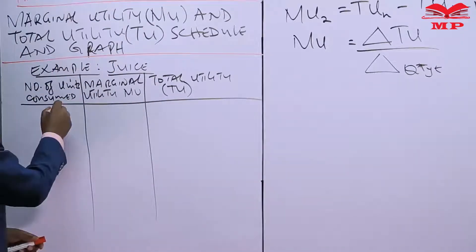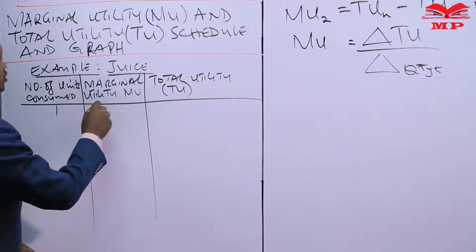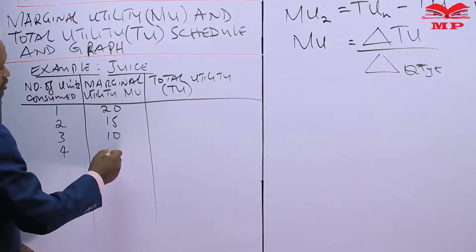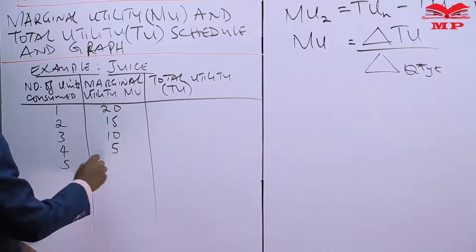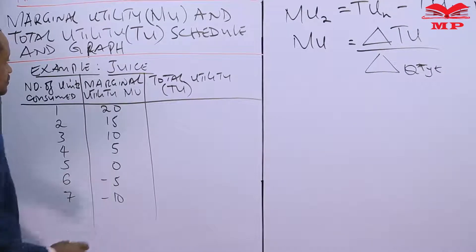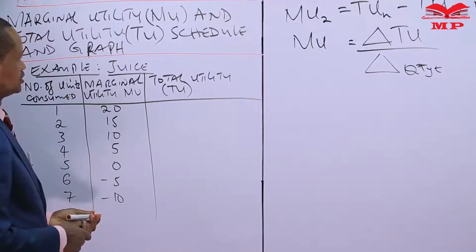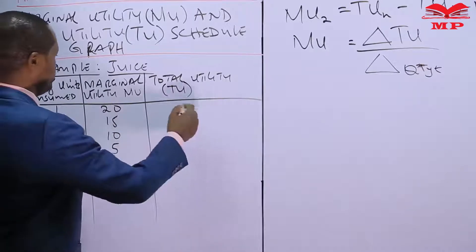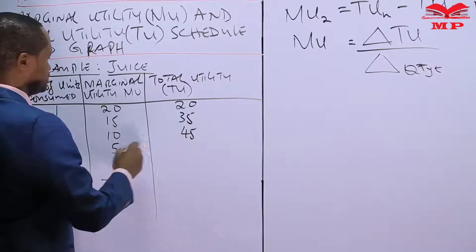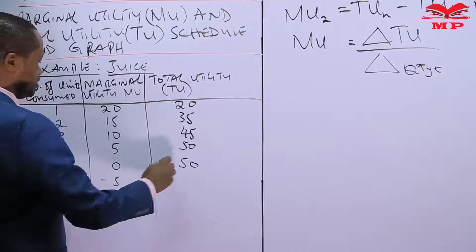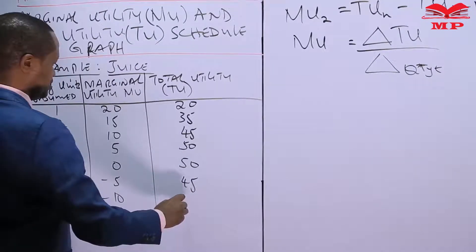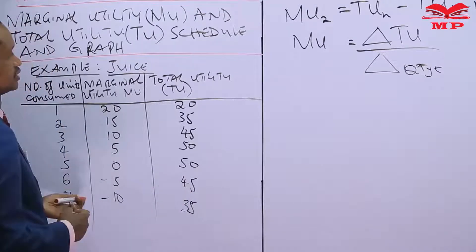From the schedule: the first glass gave a satisfaction of 20 units, the second 15 units, the third 10 units, the fourth 5 units, the fifth 0 units, the sixth negative 5 units, and the seventh negative 10 units. For total utility, we accumulate: 20, 35, 45, 50, 50, 45, 35.